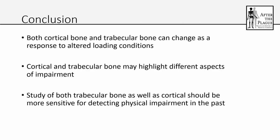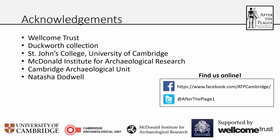In conclusion, both cortical bone and trabecular bone can be changed as a response to altered loading conditions, and they seem to be telling different parts of the same story, potentially allowing us to look at different aspects of impairment or changes in circumstance that occurred over the course of an individual's life. Studying both trabecular and cortical bone together should give us a more sensitive tool for detecting cases of physical injury in the past, rather than relying on cortical bone alone as has been done up until now. Thank you all for coming, and thank you to everyone who helped with this research and to the Wellcome Trust for funding it.